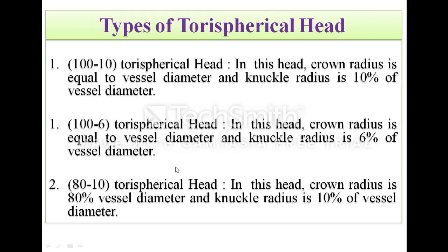There are different types of torispherical heads. In the 110 torispherical head, the crown radius equals the vessel diameter and the knuckle radius is 10% of the vessel diameter. In the 106 design, the crown radius equals the vessel diameter and the knuckle radius is 6% of the vessel diameter. In the 80-10 design, the crown radius is 80% of the vessel diameter and the knuckle radius is 10% of the vessel diameter.